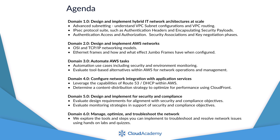For domain 3, we look at automation of AWS tasks. We examine and explore automation use cases including security and environmental monitoring, evaluate automation alternatives within AWS for network deployments, and evaluate tool-based alternatives within AWS for network operations and management.